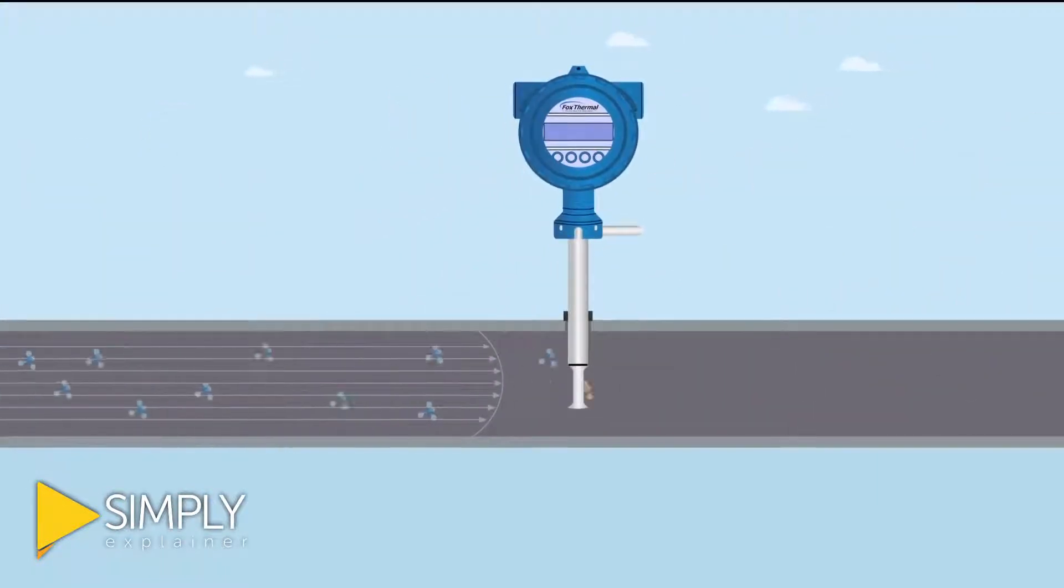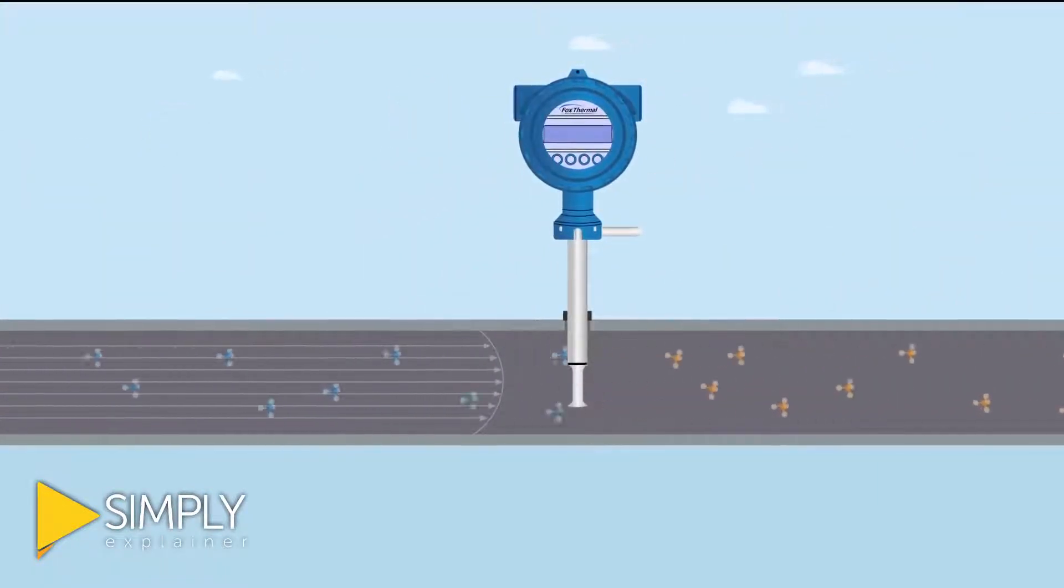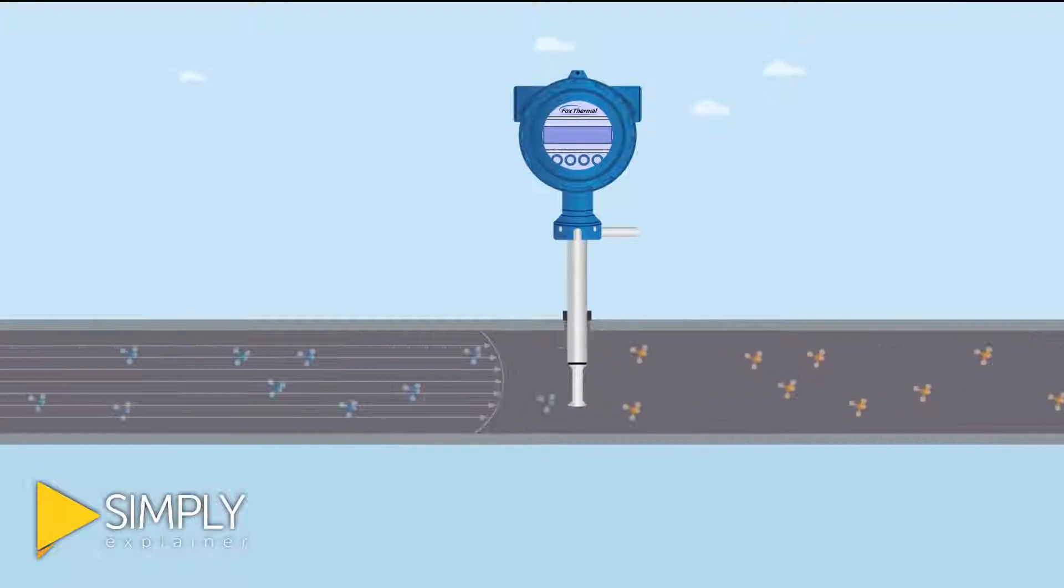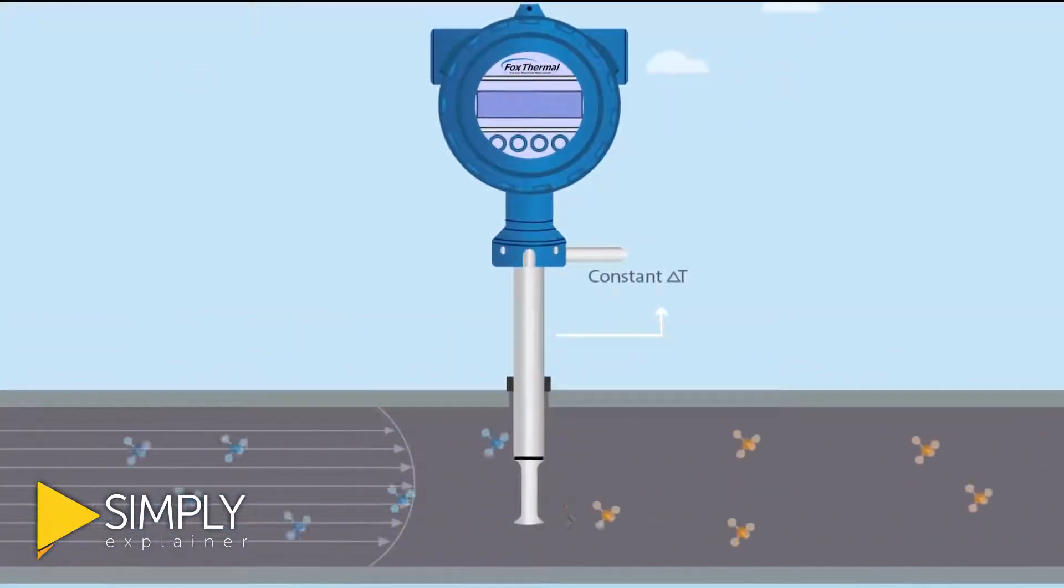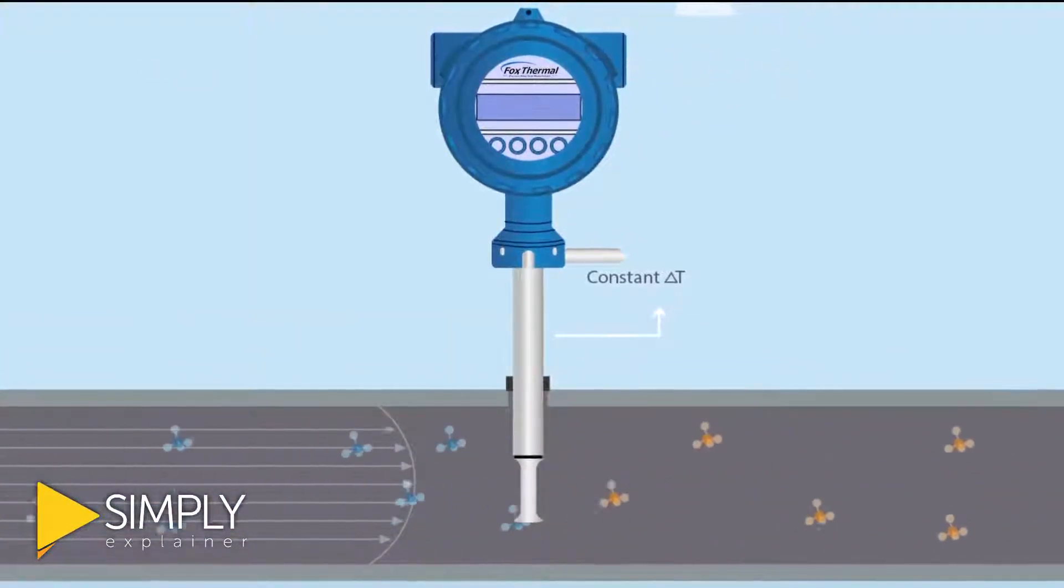Consider thermal mass flow meters. This technology uses a constant temperature differential or constant delta T technology to measure the mass flow rate of air and gases.